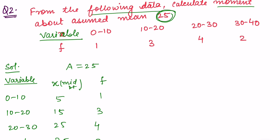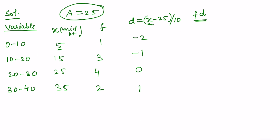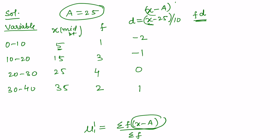The frequencies are 1, 3, 4, and 2. Since we have to find the moment at a = 25, we compute (x − 25)/h, changing the scale by dividing by h = 10. So d = (x − 25)/10 gives: (5−25)/10 = −2, −1, 0, and 1.